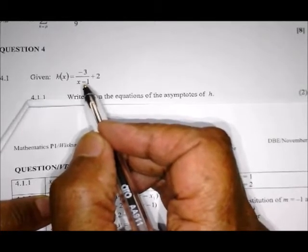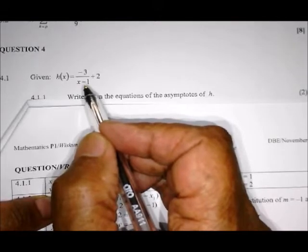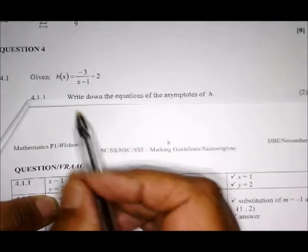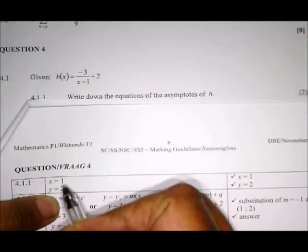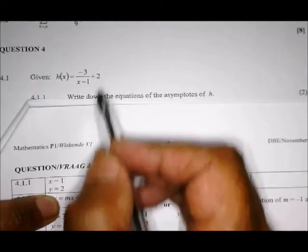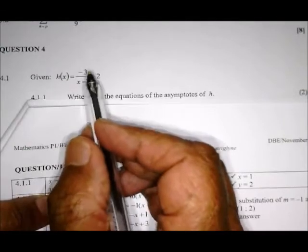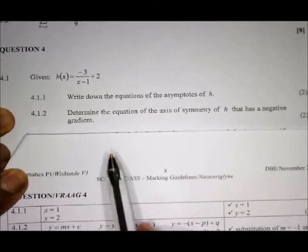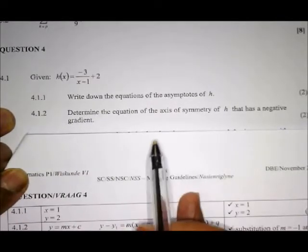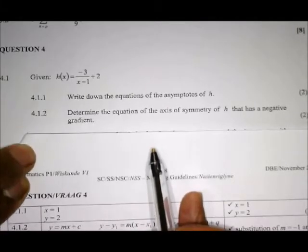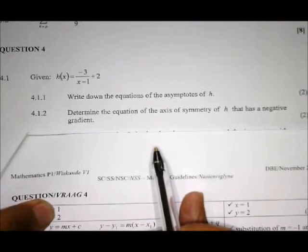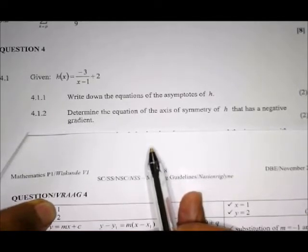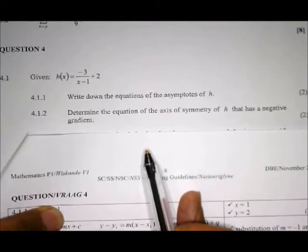The second question asks to determine the axis of symmetry. What does axis of symmetry mean? An axis of symmetry divides a graph into two identical parts. It will lie through this point. Because we know the asymptotes intersect at (1, 2), the axis of symmetry will run through that point.